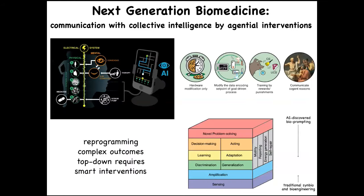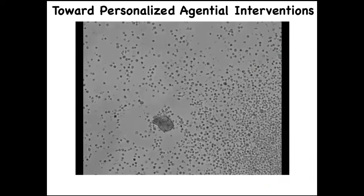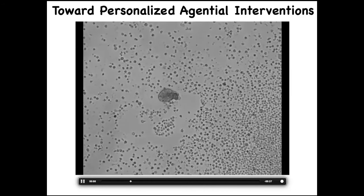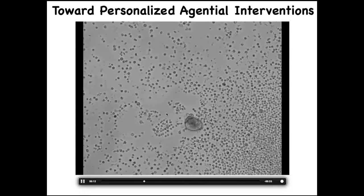For biomedicine, the rubber hits the road: can we use the tools of behavioral and neuroscience to achieve new capabilities in regenerative medicine and cancer? If we take seriously the multi-scale architecture of the body where different pieces have different competencies, we have lots of new approaches. This structure — you might think it's a primitive organism from the bottom of a pond, but if you sequenced its genome you would see Homo sapiens. It's 100% human genome.